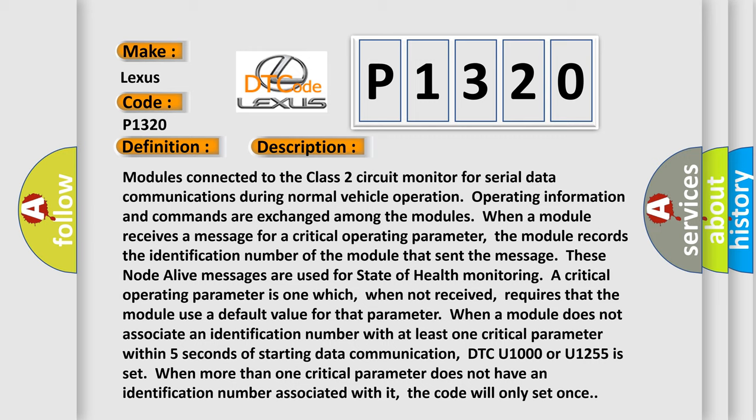A critical operating parameter is one which, when not received, requires that the module use a default value for that parameter. When a module does not associate an identification number with at least one critical parameter within five seconds of starting data communication, DTC U1000 or U1255 is set.